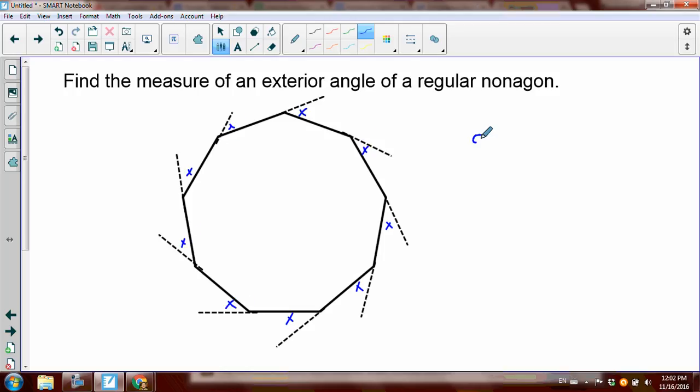So what does that 9x equal? The exterior angles always have a sum of 360. So that means that each one of them is a 40 degree angle. Piece of cake.